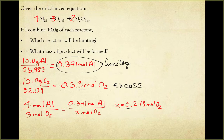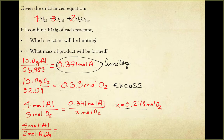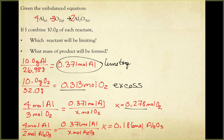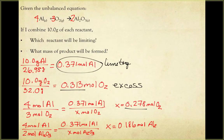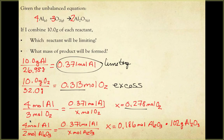This means that aluminum will determine how much product we'll get. So now I can complete my stoichiometric calculation using my limiting reactant. From my balanced equation, I know that for every 4 moles of aluminum, I'll get 2 moles of aluminum oxide. But I actually have 0.371 moles of aluminum, so I want to know how many moles of Al2O3 I'll be able to form. Solving for x, I find that I'll be able to produce 0.186 moles of aluminum oxide. Since the question asks for mass of aluminum oxide, I can now convert this value to mass by multiplying by the molar mass of Al2O3, which is 102 grams per mole. Completing this calculation, I find that I can produce 19 grams of Al2O3.